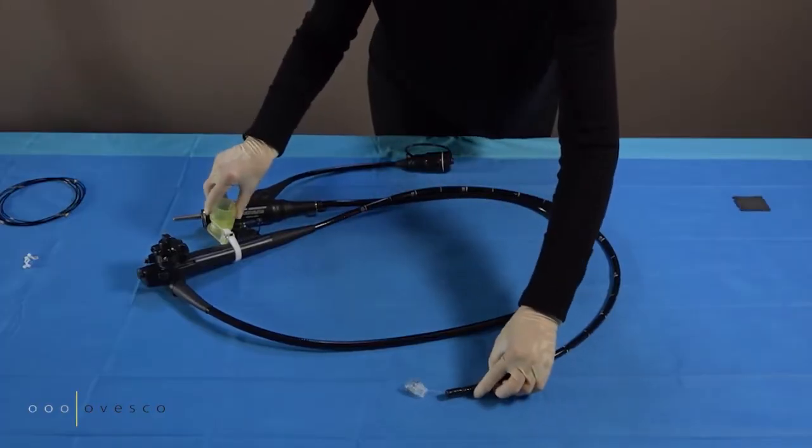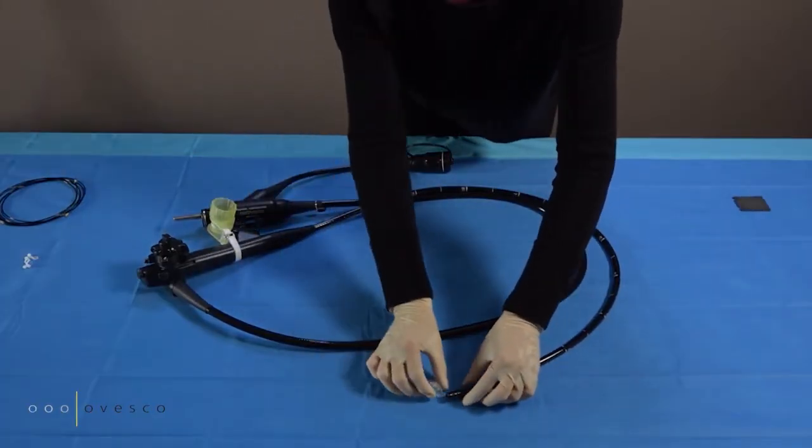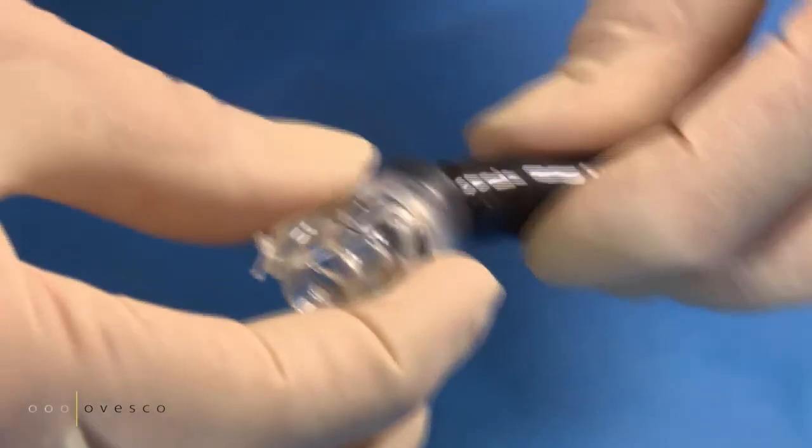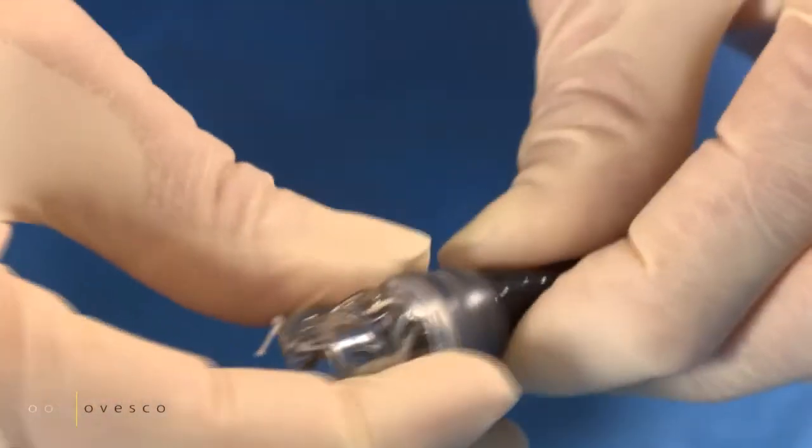Place the cap onto the endoscope. Push the endoscope forward until it reaches the marking.